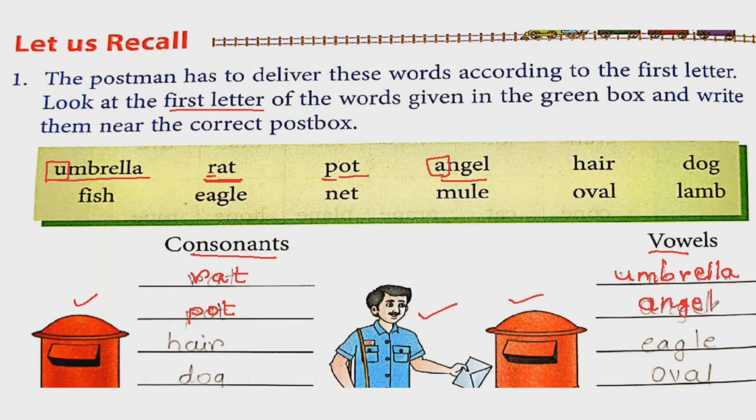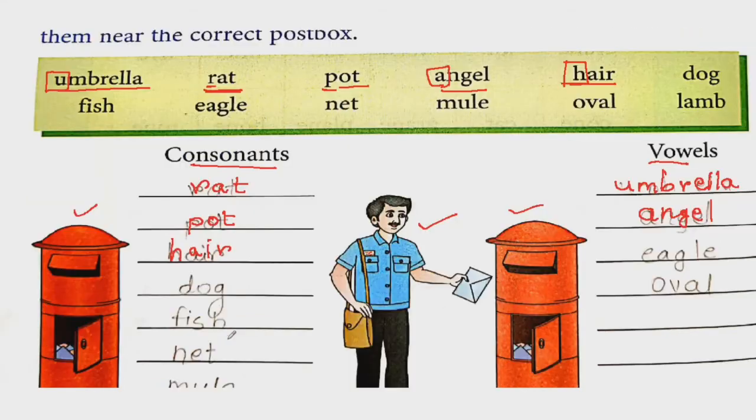Now here, H, A, I, R, hair. Here first letter is consonant. So H, A, I, R. Then D, O, G, dog. Here also first letter is what? Consonant. So we will write D, O, G, dog in consonant post box. Next is fish, F, I, S, H. Fish, what is F? Consonant. So F, I, S, H, fish.